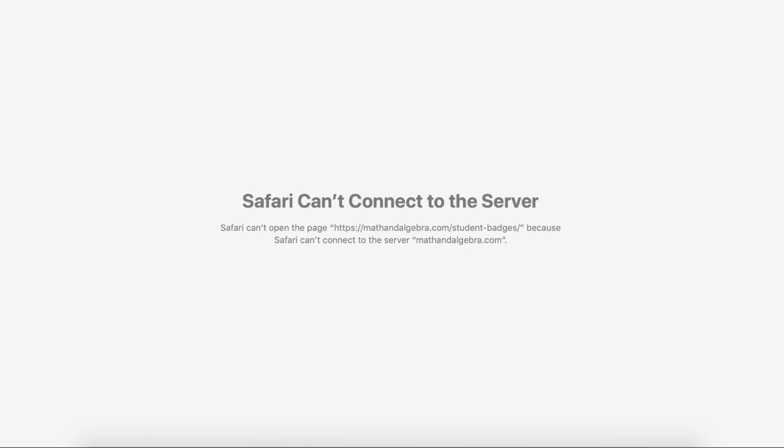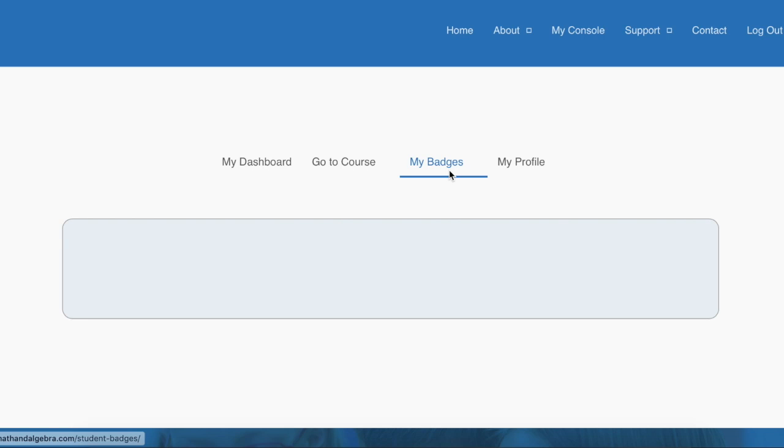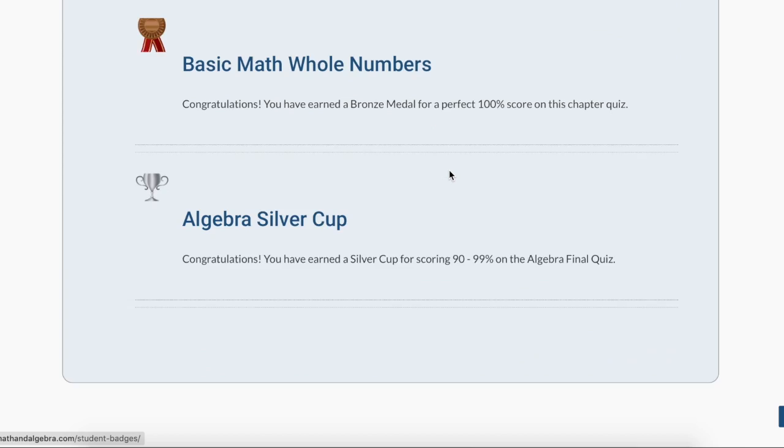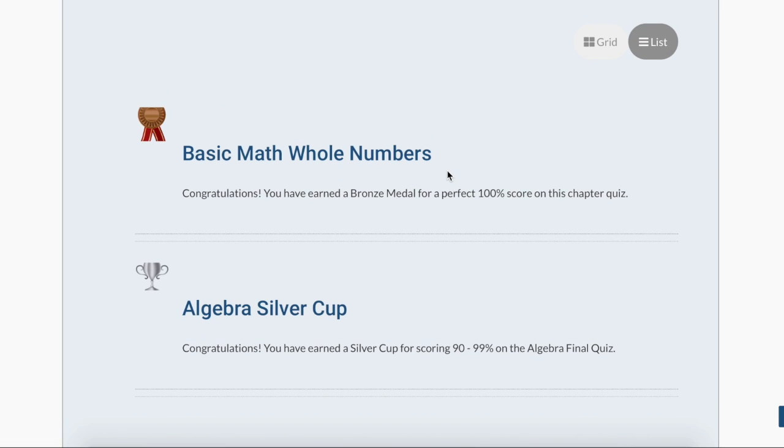So let's go here and see my badges. Oh my goodness. I'm sorry guys. I don't know what's up with our internet. It is so frustrating that just boots us off. Okay. So these are the awards that Charlie's earned so far, the basic math whole numbers and the algebra silver cup. So this is a fun spot for them to go and check out and there's not a lot of silly goofy play around stuff that they can go get distracted on and not actually complete their lesson.